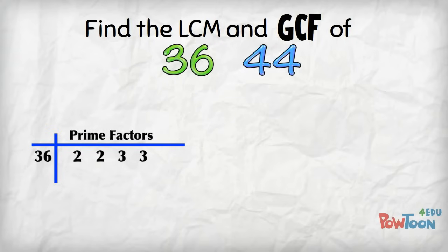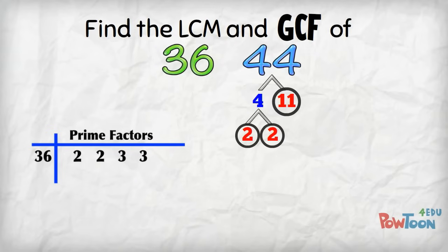44 is from 4 × 11, and 4 is from 2 × 2. Put those prime factors into the table, aligning like factors: 2 × 2 × 11.